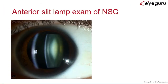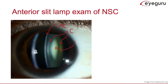This is an example of what a nuclear sclerotic cataract might look like on an anterior slit lamp exam. Here we see the cornea, in black is the anterior chamber, and the first segment of the lens is the anterior capsule. Just beneath that is the cortex — we can see both the anterior and posterior cortex — and in the middle is the nucleus. In this example the nucleus is very cloudy and opaque, because this patient has a nuclear sclerotic cataract.